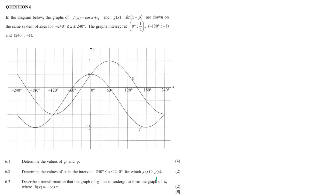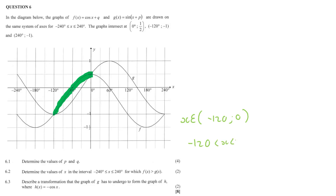So where is f(x) greater than — higher than — our g graph? Tracing the f graph, it is below g(x) for a stretch, then it goes above g(x) for a portion, and at zero degrees it goes back below and stays below until the graphs intersect again. So f(x) > g(x) only from negative 120 to zero degrees. In interval notation: x is an element such that negative 120° < x < 0°.